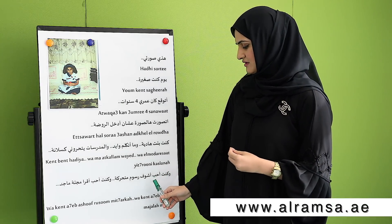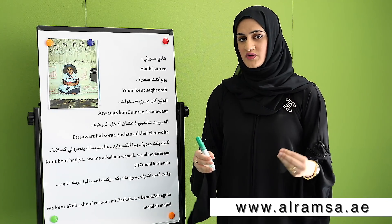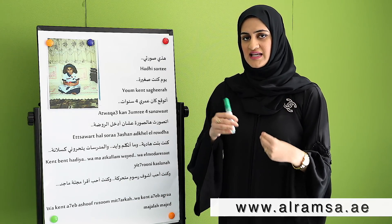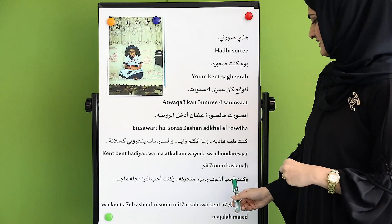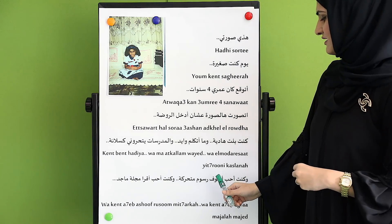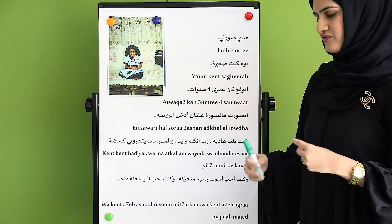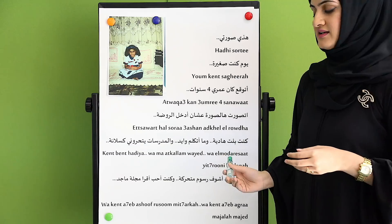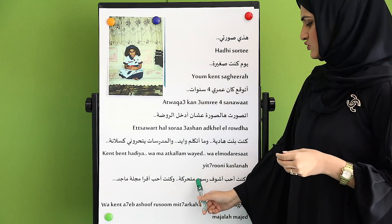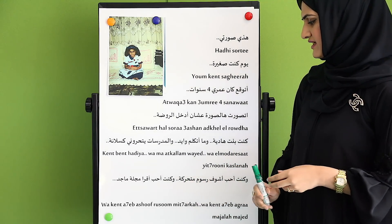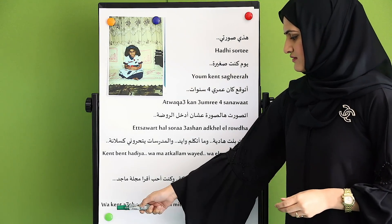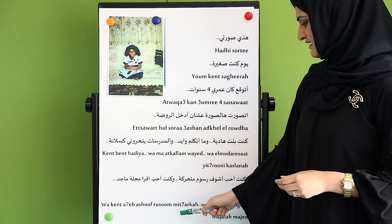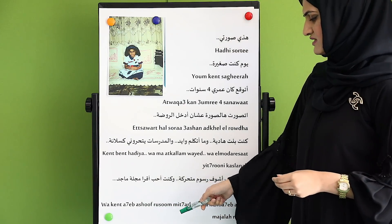كنت أحب — after 'I was' it will always be present tense. So you say كنت أحب أشوف — 'I used to like to watch.' كنت أحب أشوف رسوم متحركة, which means cartoons.